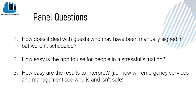The second question is how easy is the app to use for people in a stressful situation. The app is designed to be quite easy to use — an administrator triggers the checking process, and instantly an employee receives an email where they can access the app, click to mark themselves safe, register a few names of people around them, and click submit. It only takes a few minutes. The third question is how easy are the results to interpret for emergency management. From the Power BI report, you can directly see who is safe and who is not, so you can focus efforts on those who are unaccounted for and not worry about those already marked safe.